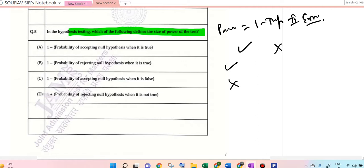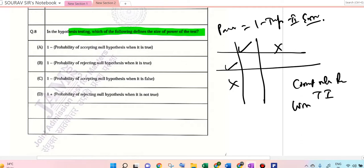If a correct value is rejected, that is Type 1 error. And a wrong value is accepted, that is Type 2 error. Cross cross: no error, no error. This is Type 1 and this is Type 2 error. So here in this case, the answer is 1 minus probability of accepting null hypothesis when it is false, minus Type 2 error. So answer 8 is C.